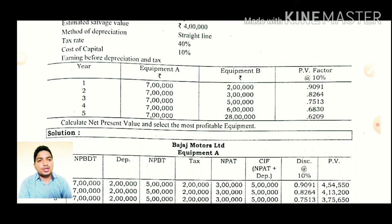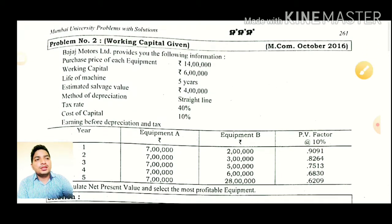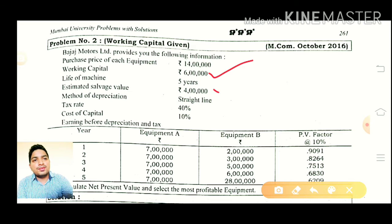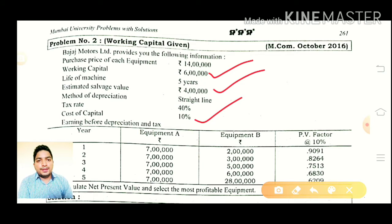We would like to add some changes to the given information. There are a few changes: the working capital amount is about 6 lakh, then 2 lakh, then 1 lakh working capital on average. You can add extra salvage value, or you can add an extra cost of capital, and I will give the exclusive cost of capital.